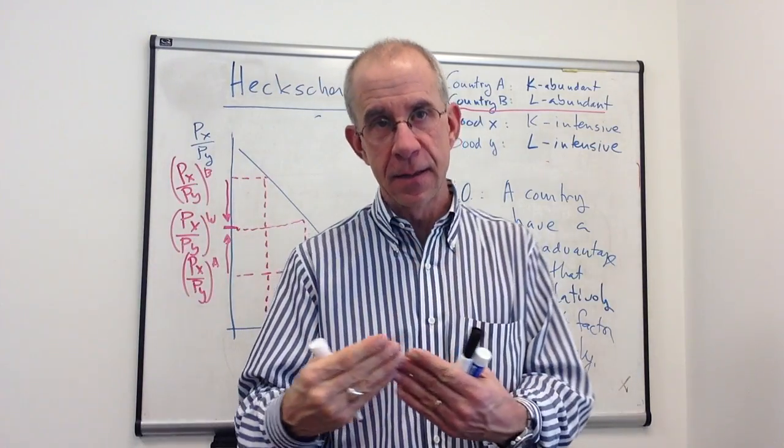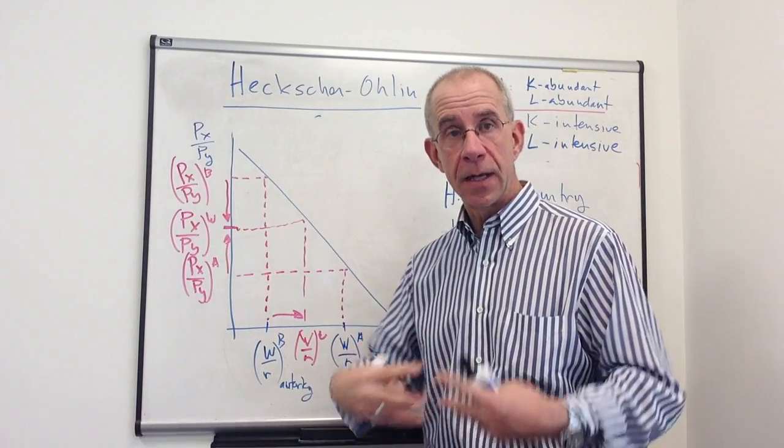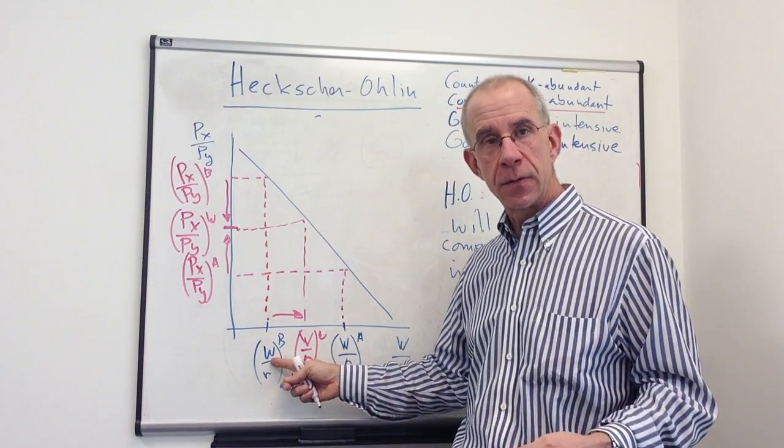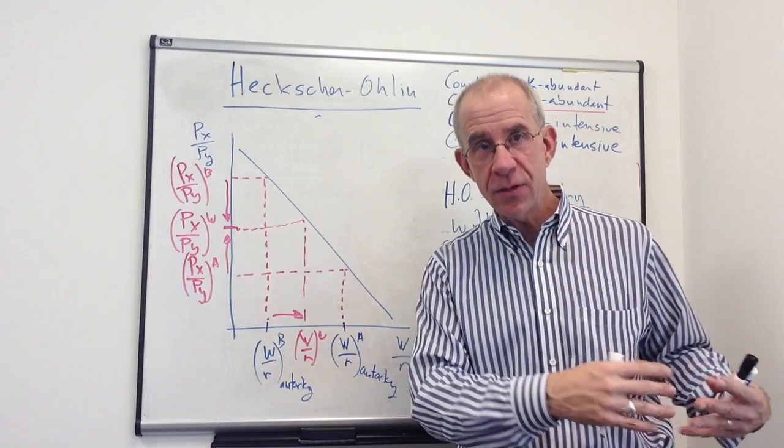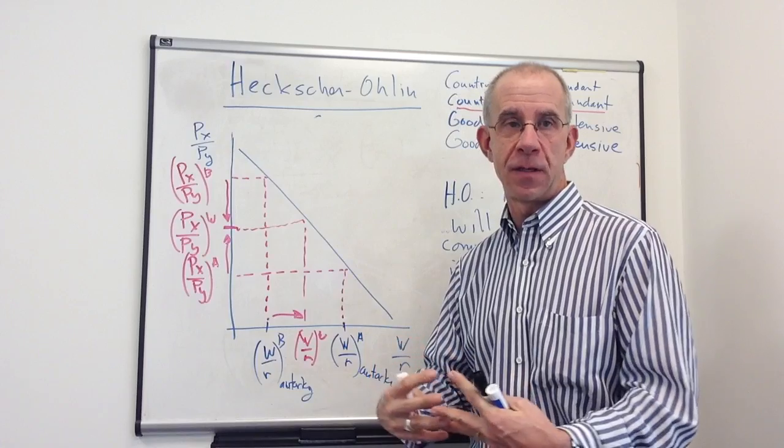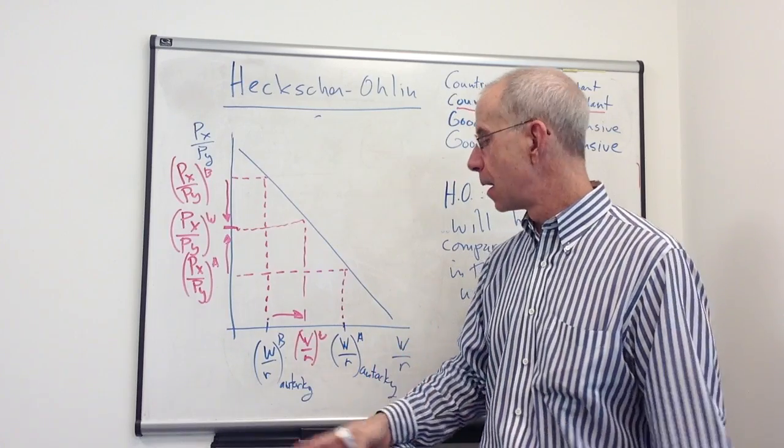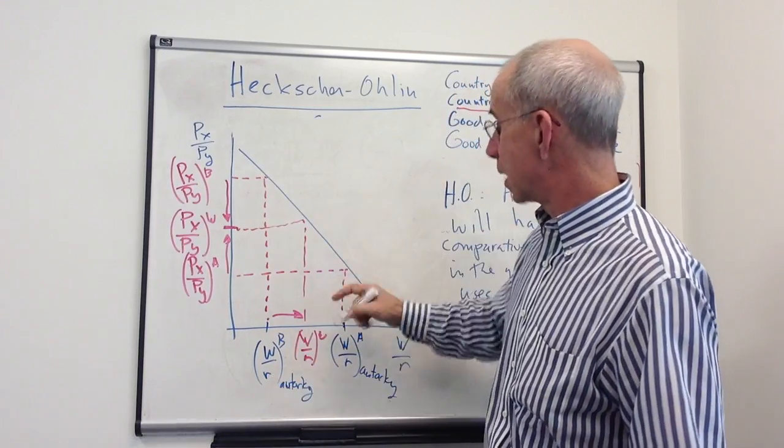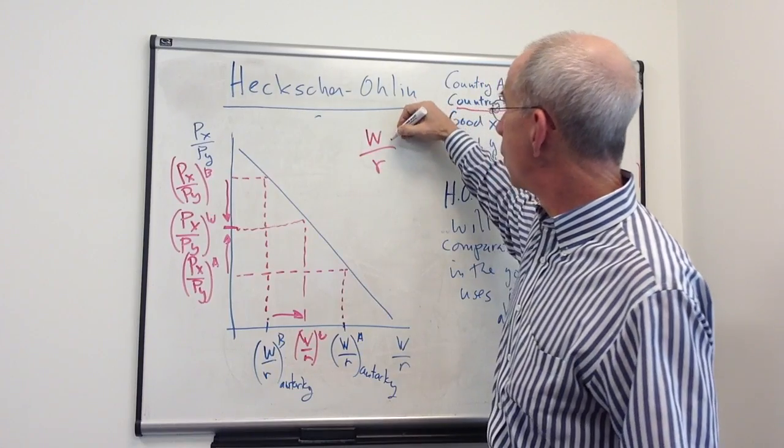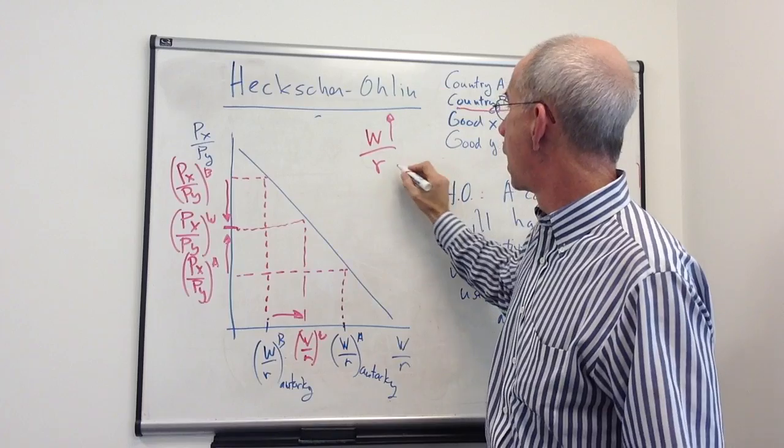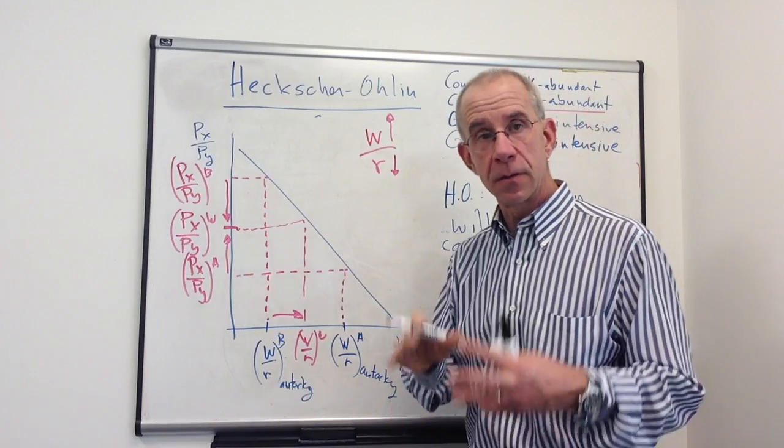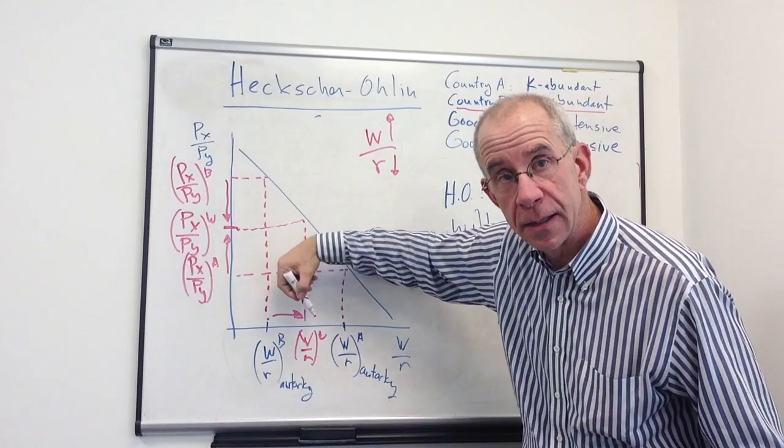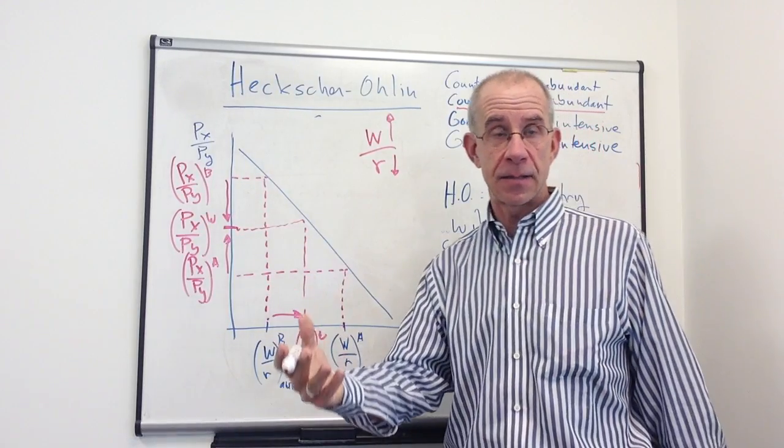What's happening is that the demand in the economy for labor is going to go up because of the increase in the production of the labor intensive good, bidding up the wage. The importation of the capital intensive good is going to reduce the demand, the economy-wide demand for capital, which is going to decrease the rental rate. So in country B, the wage is getting bid up and the payments to capital go down, making the ratio go up. So the wage-rental ratio is going to tend to rise in the labor abundant country as they open up to trade.